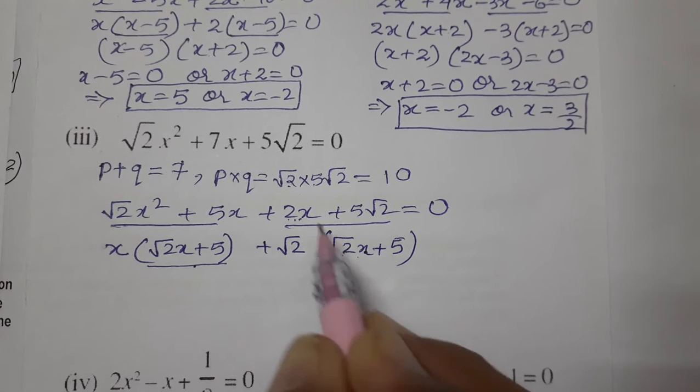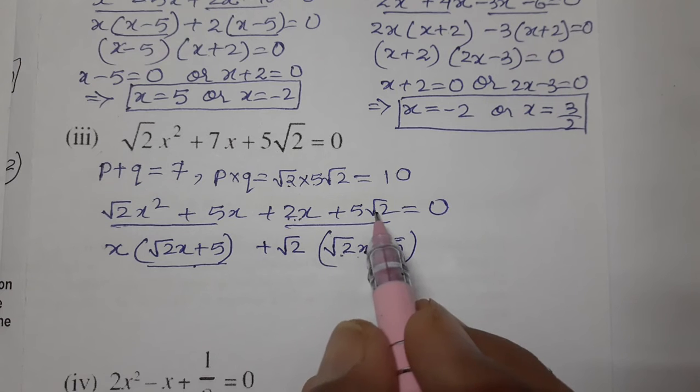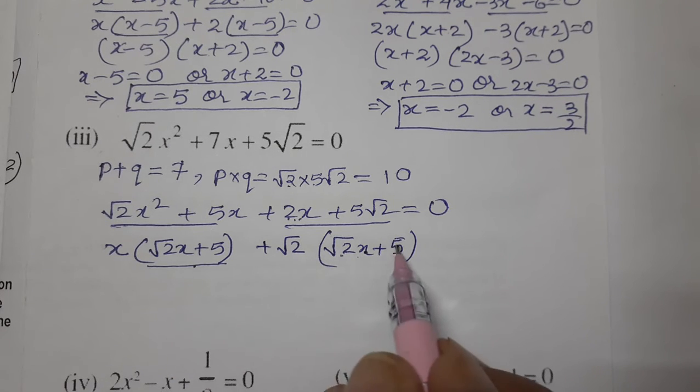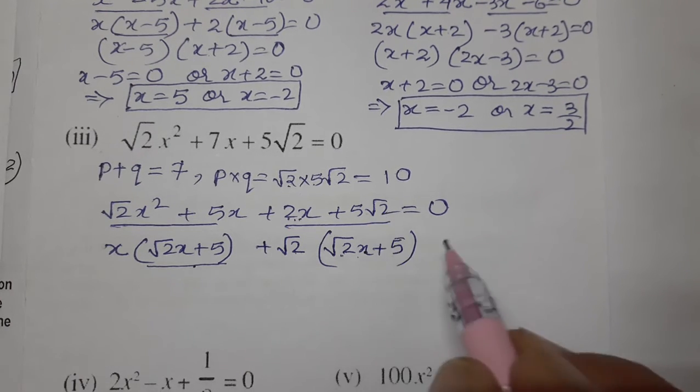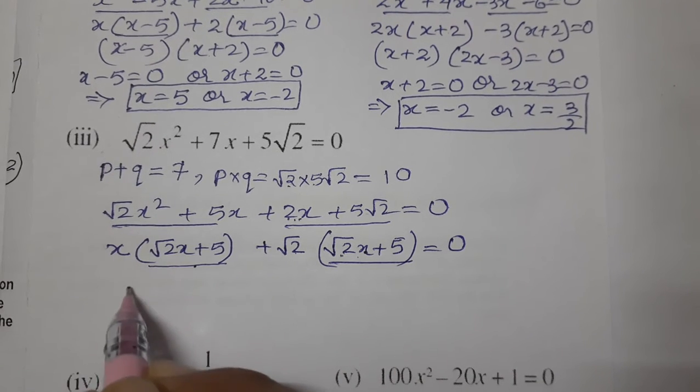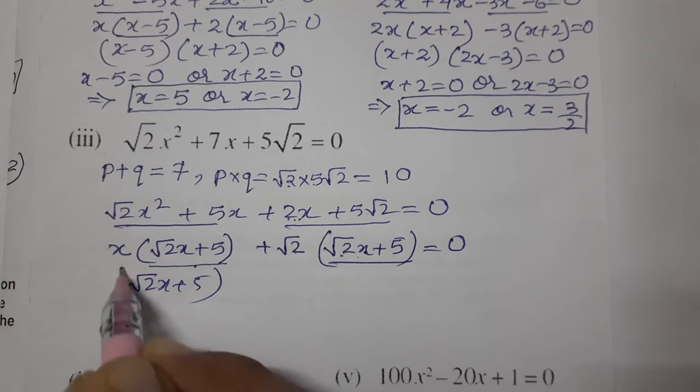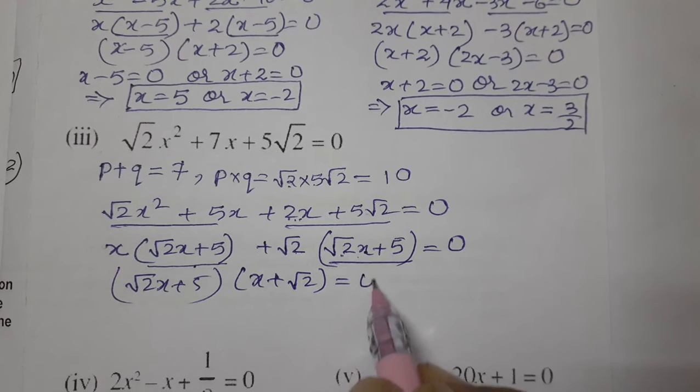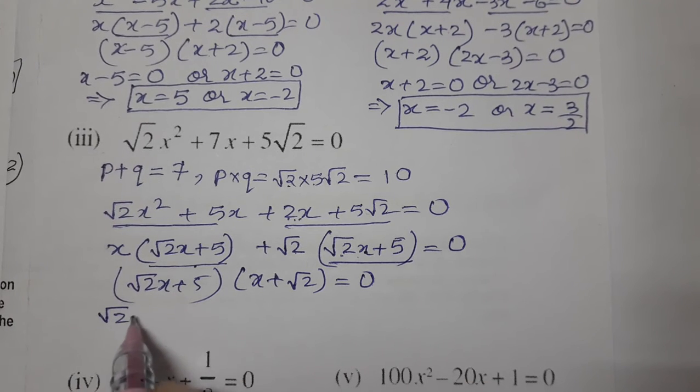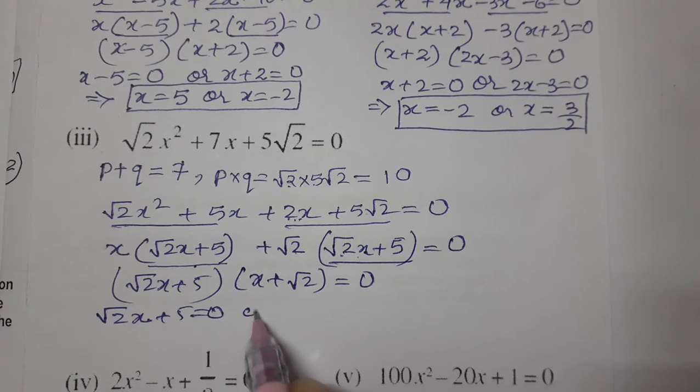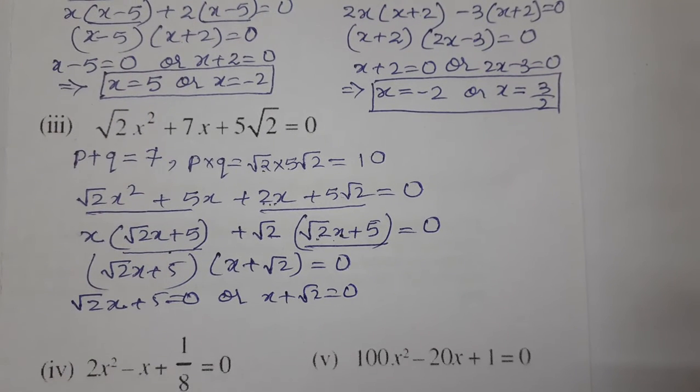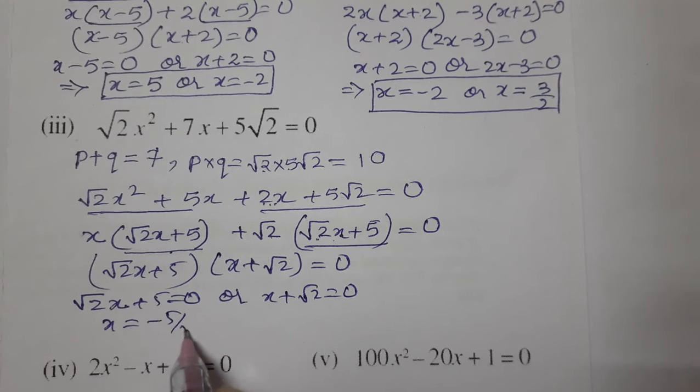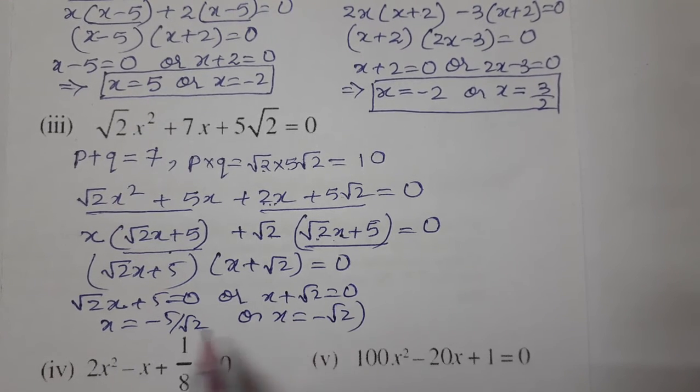We multiply by √2 to make it easy to factor. √2 × √2x = 2x, and √2 × 5 = 5√2. So we can write √2(√2x + 5) + √2(√2x + 5). Taking (√2x + 5) common: (√2x + 5)(x + √2) = 0. The product of two numbers is zero, so √2x + 5 = 0 or x + √2 = 0. This gives x = -5/√2 or x = -√2. These are the two roots.